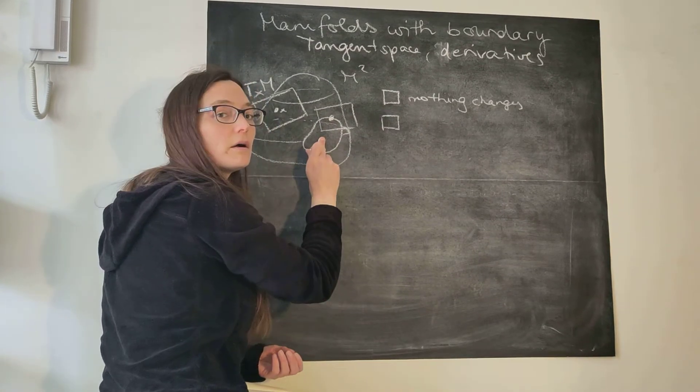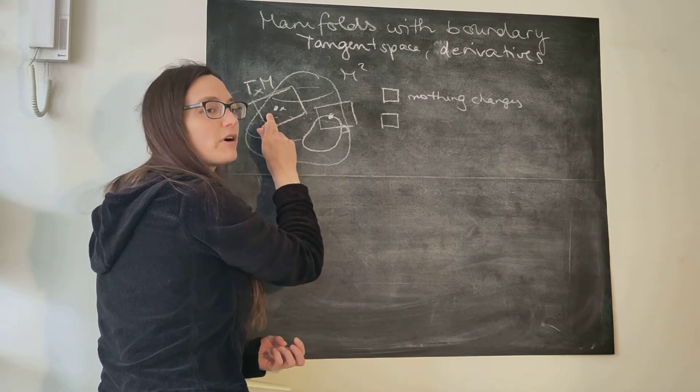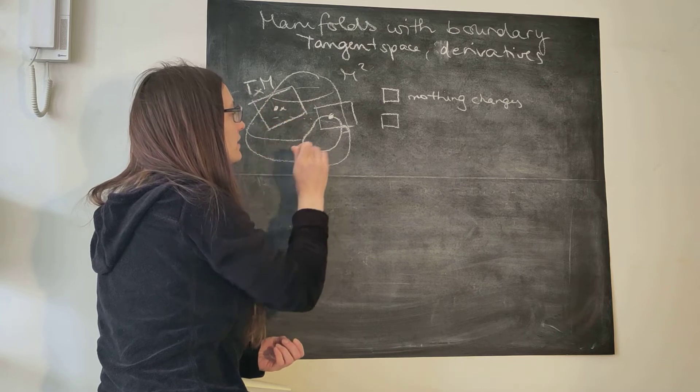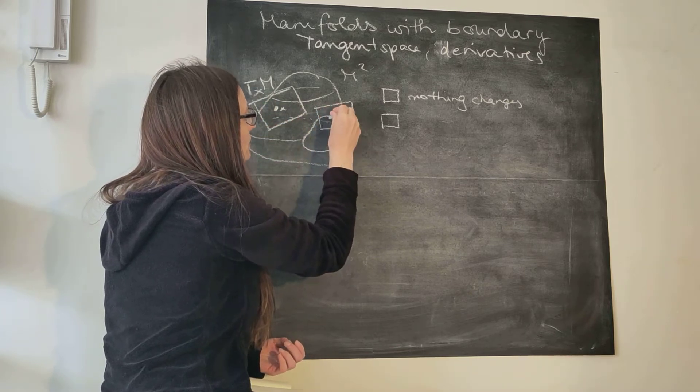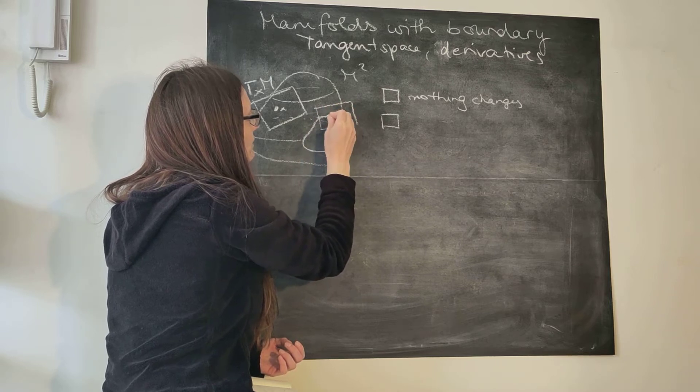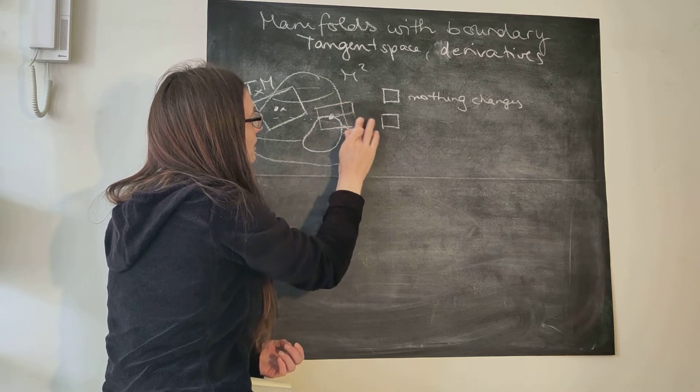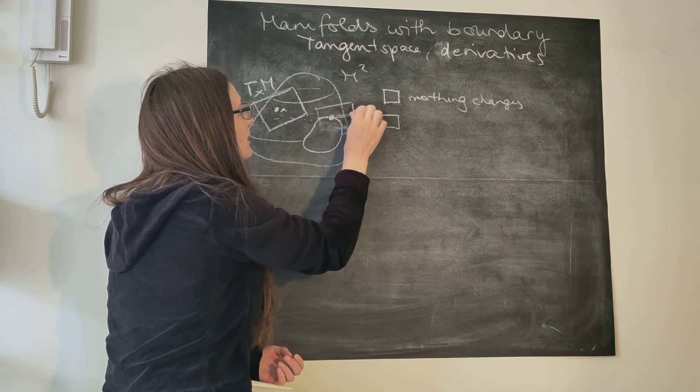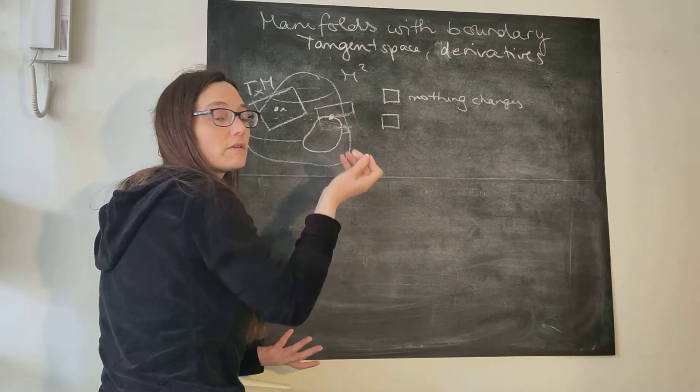Or do you think it sounds dodgy? Here we have a parametrization from R2 and we get an R2 plane as a tangent plane. So then also here we should somehow restrict that and say we'll also only get an H2 upper half plane here as a tangent space because this is where we came from.